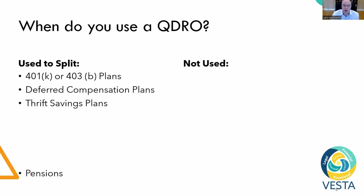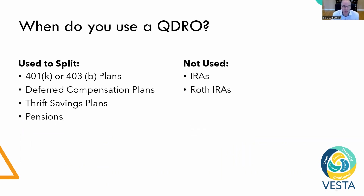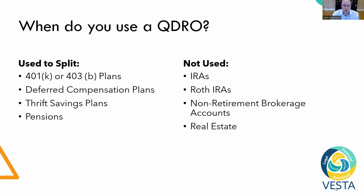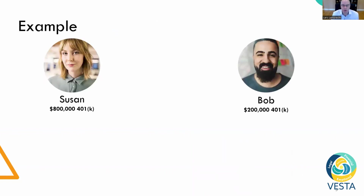QDROs can also be utilized to split pension plans that are available either with some private employers or government or state agencies. QDROs are not used to split IRAs or Roth IRAs — that's a very important distinction. You don't actually need a QDRO to split those accounts once your divorce is finalized. QDROs are also not used to split non-retirement brokerage accounts, real estate, or bank accounts.